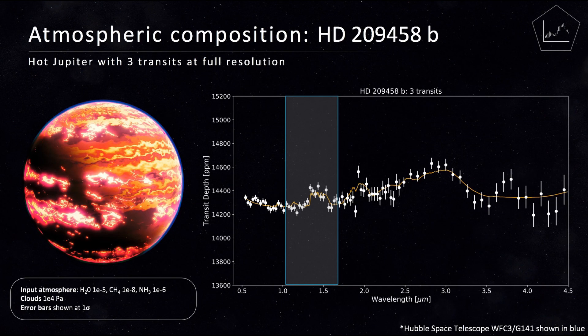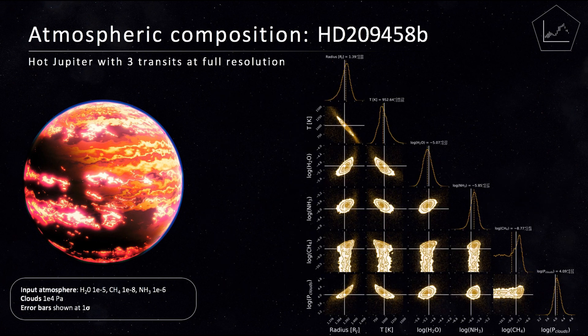HD 209-458b has been studied by a number of ground-based and space-based instruments, and shown here is a simulated spectra that can be obtained with three Twinkle transits. The modelled atmosphere includes water, methane and ammonia, along with a cloud deck. By performing a Bayesian retrieval on the simulated data, we can see that Twinkle would allow for a thorough characterization of hot, gaseous planets such as HD 209-458b in just a few observations.